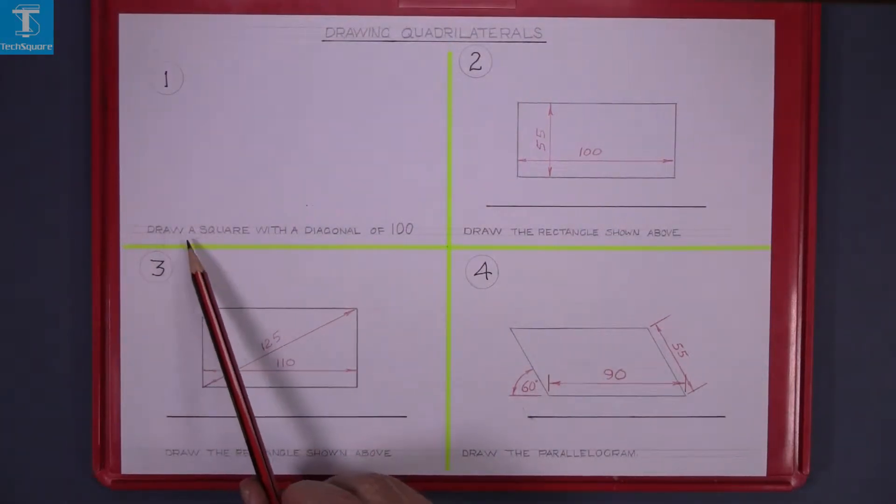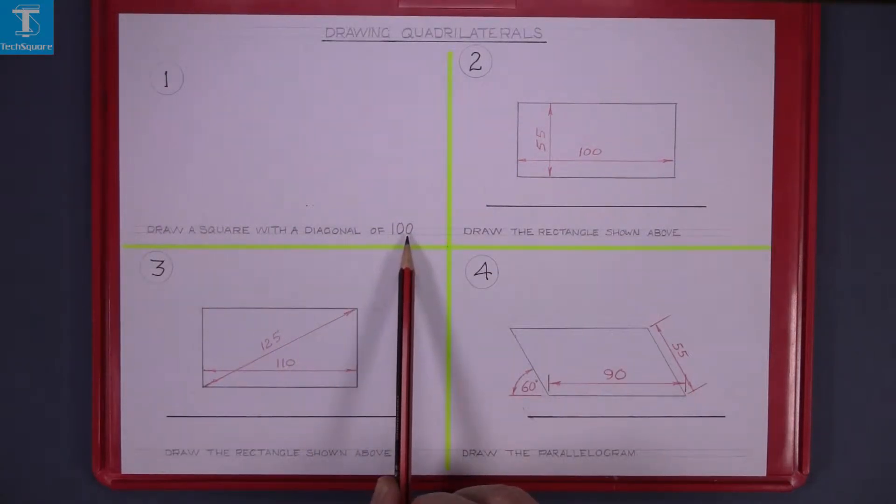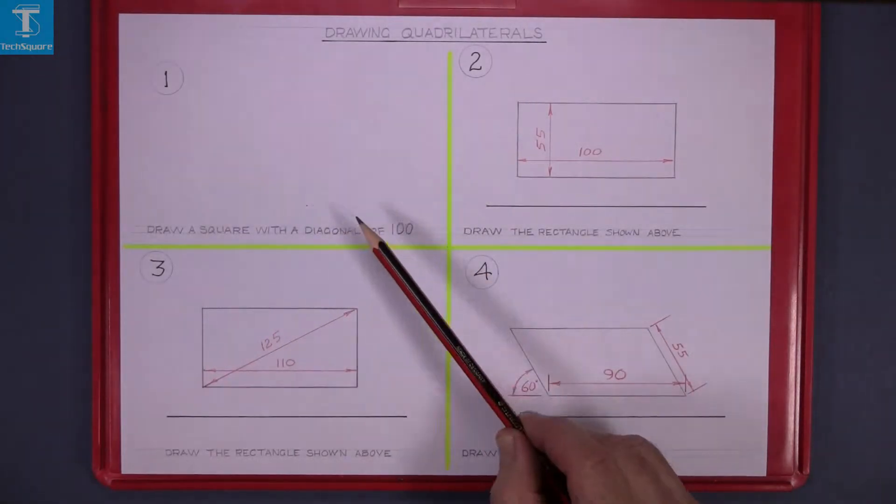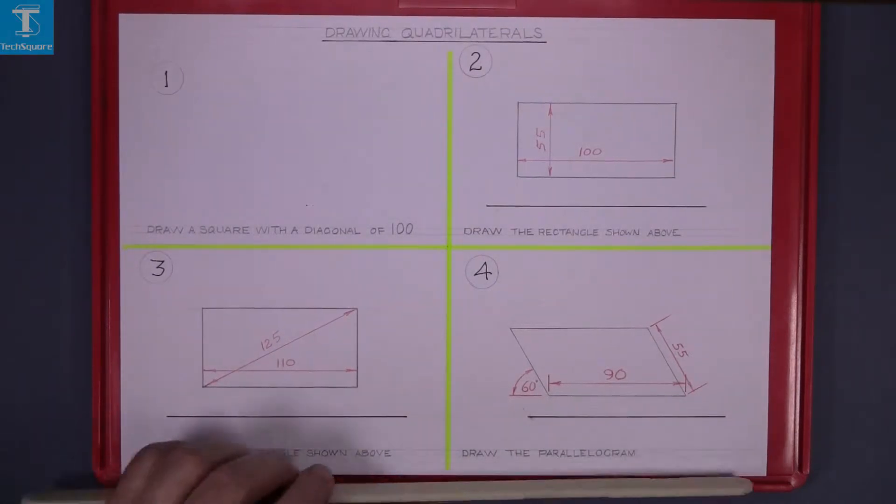The first question is draw a square with a diagonal of 100 millimetres. The line at the angle in the square is to be 100 millimetres and of course that is always at 45 degrees in a square.